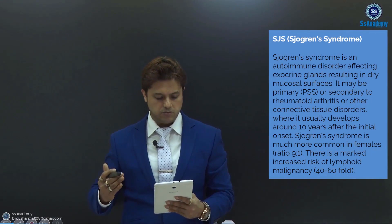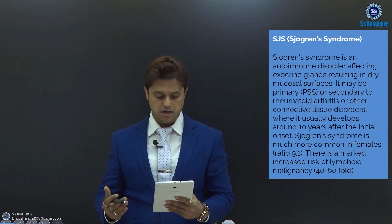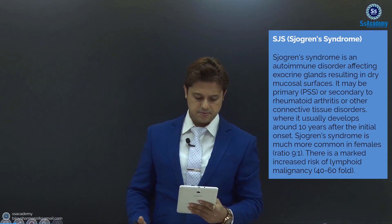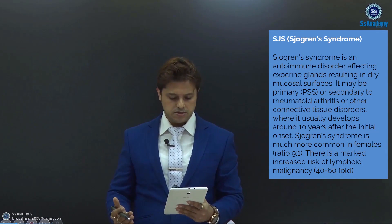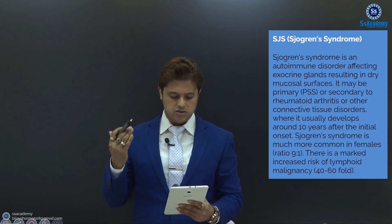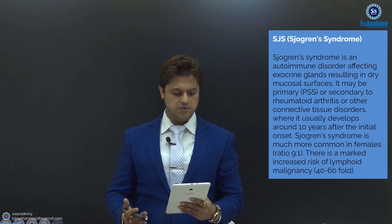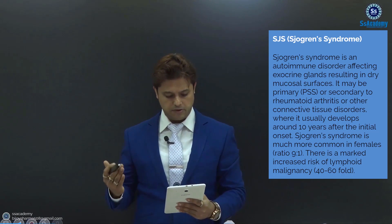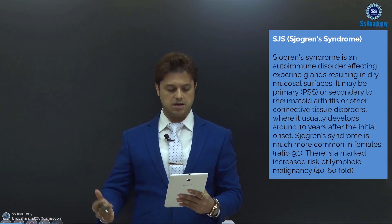Sjogren's syndrome is an autoimmune disorder affecting the exocrine glands, resulting in dry mucosal surfaces. So it's an autoimmune disorder affecting exocrine glands — remember exocrine. Dry mucosal surfaces — remember dry. It may be primary, called PSS, or secondary to rheumatoid arthritis or other connective tissue disorders.